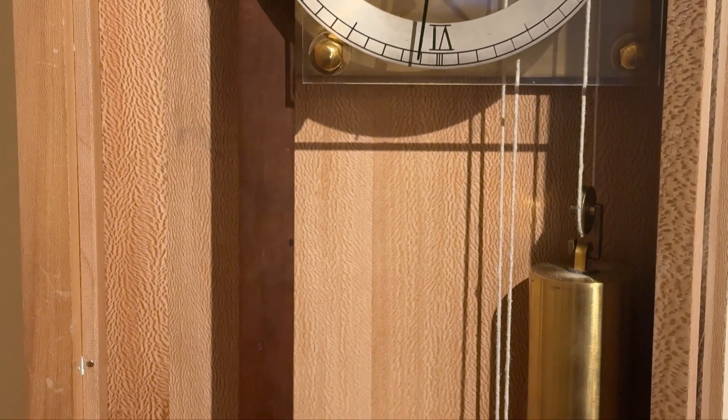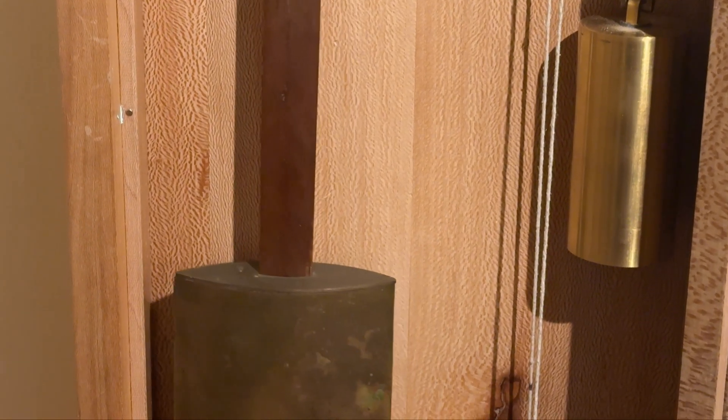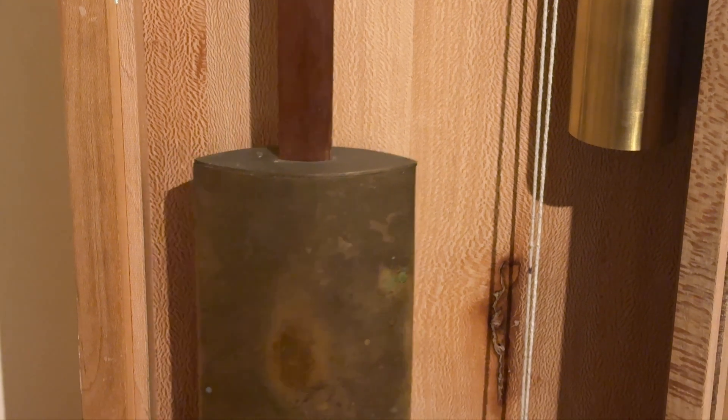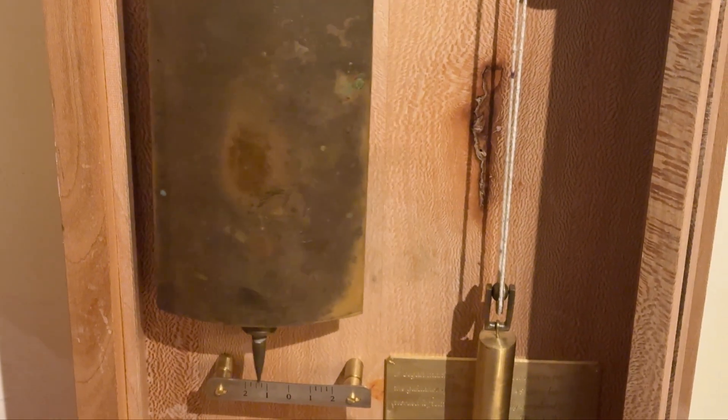So moving down the clock, you can see there's just a simple wooden pendulum. There's a lead-filled bob, a very heavy bob, which approximately compensates for temperature variation.